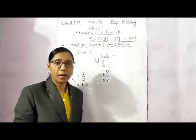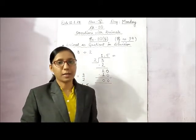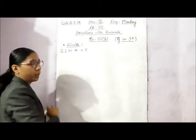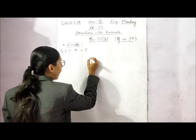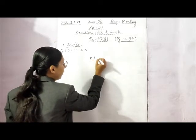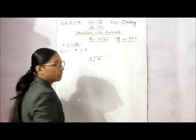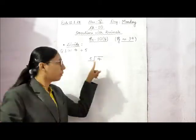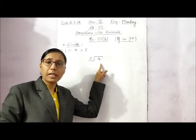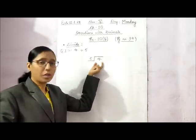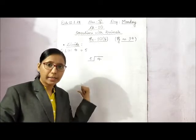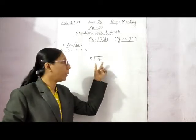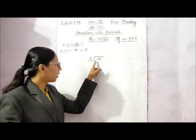Now in this sum, 4 divided by 5. 5 is the divisor and 4 is the dividend. The divisor is greater than the dividend. When the divisor is greater than the dividend, the number inside is smaller. What we have to do is make it a larger number.